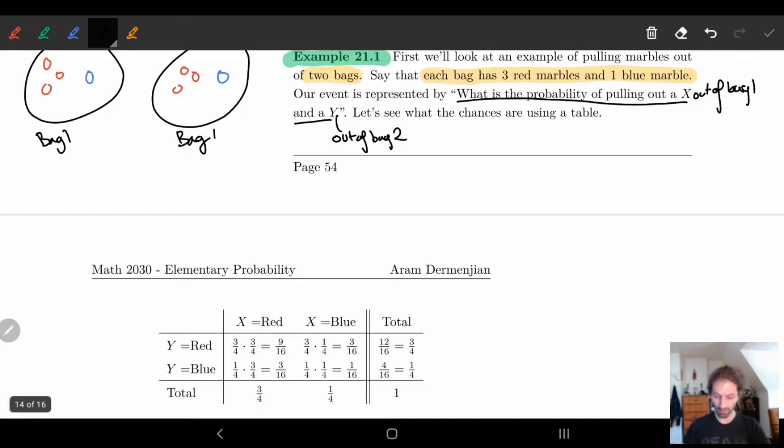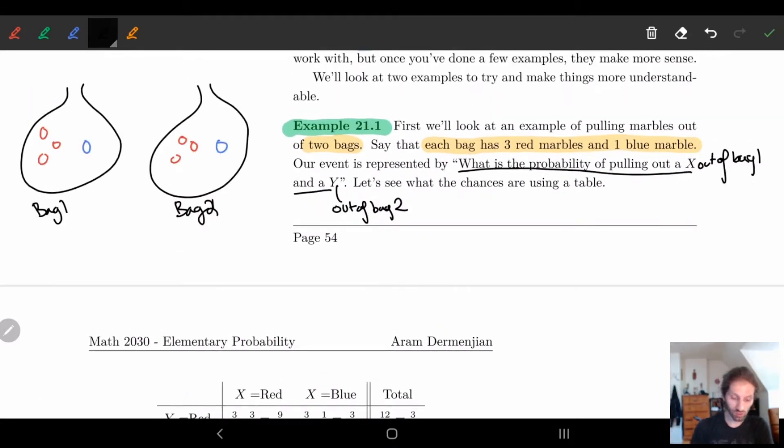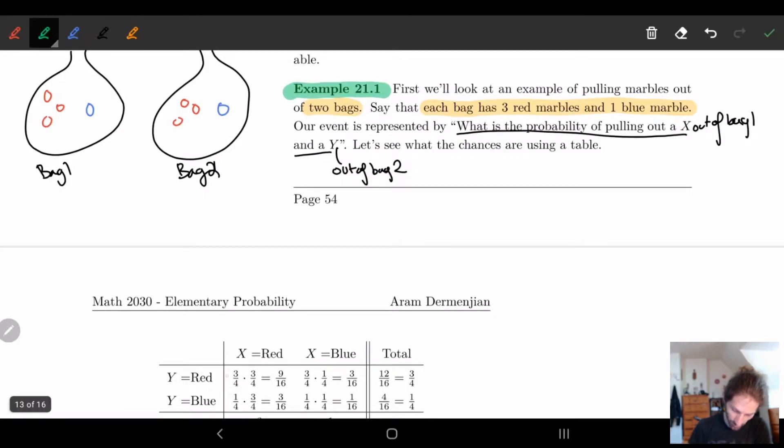If I have x be red, so I pull a red out of bag one, I have a three-fourths chance. There's three reds out of four, so I have a three-fourths chance of pulling a red out. In bag two, I have also a three-fourths chance of pulling a red out. So if x is red and y is red, then I have three-fourths times three-fourths. Remember, because they're independent, so I'm allowed to multiply. And we get nine over 16 as the probability.